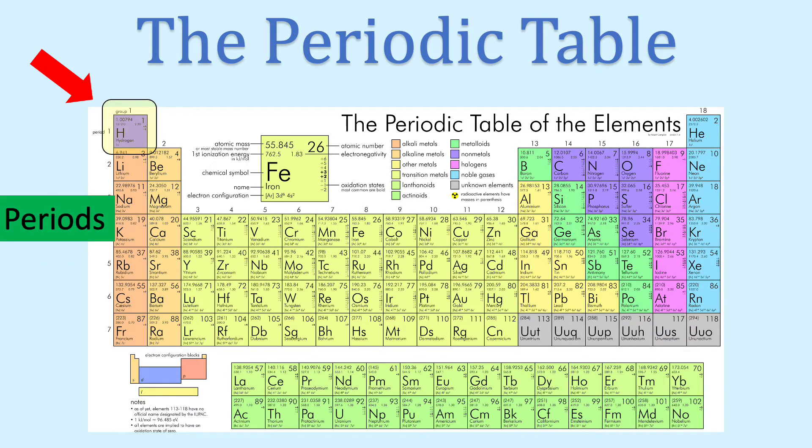Horizontal rows of elements are called periods. Period 1 contains hydrogen and helium only. Period 2 starts with lithium and ends with neon.